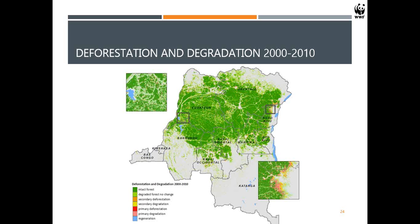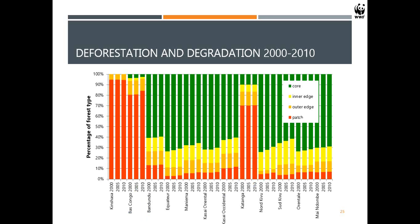We now have a pretty good idea of how these forests have been changing over a 10-year period, and this can be updated with additional forest cover as it becomes available. We can also summarize results by province, showing the percentage of core, inner edge, outer edge, and patch in all the different provinces. For example, Kinshasa province doesn't have much forest and what's there is all degraded, while other provinces like Tshuapa and Maniema show increasing fragmentation categories over time.